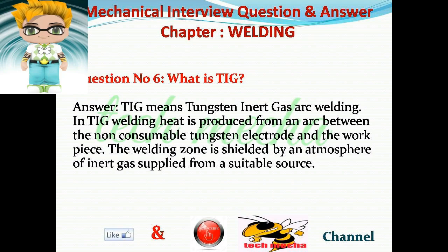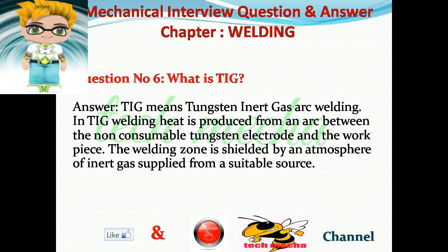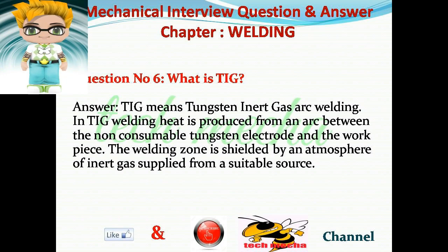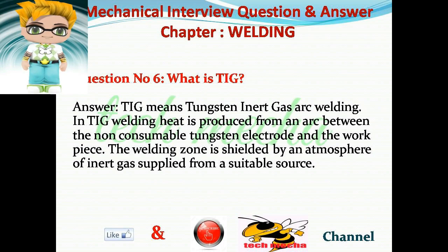Question number six: What is TIG? Answer: TIG means Tungsten Inert Gas arc welding. In TIG welding, heat is produced from an arc between the non-consumable tungsten electrode and the workpiece. The welding zone is shielded by an atmosphere of inert gas applied from a suitable source.